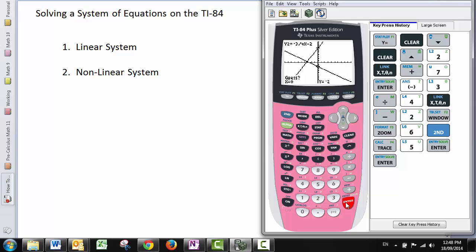It asks me for a guess. On linear equations, this is irrelevant. Just hit enter. And it gives me the intersection point as negative 3.27 repeating, comma 0.45 repeating.